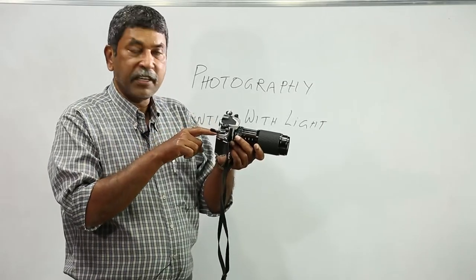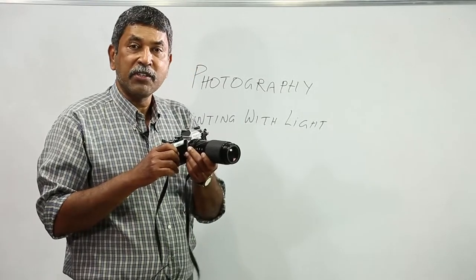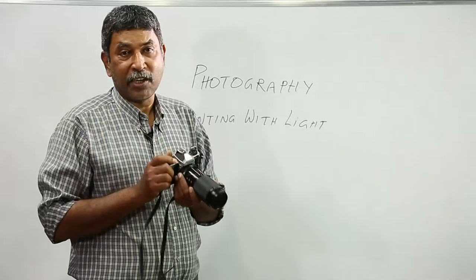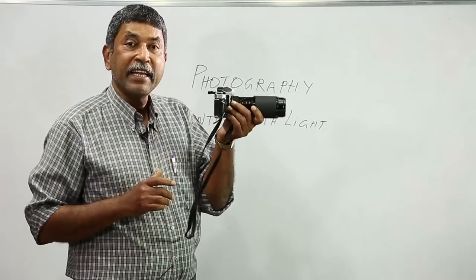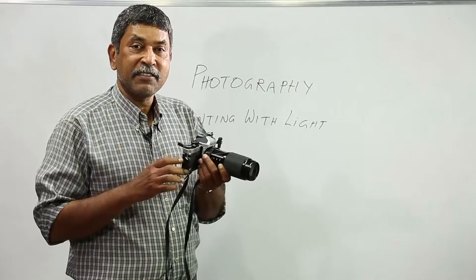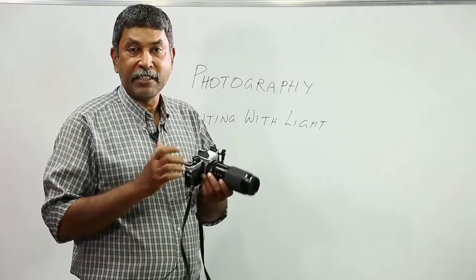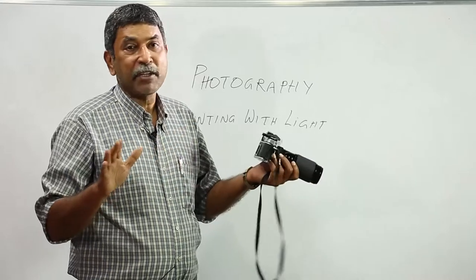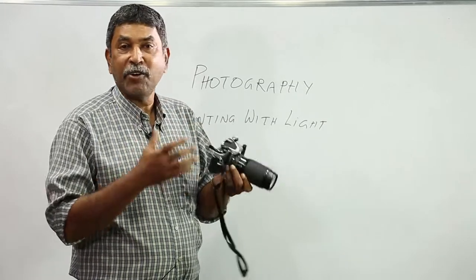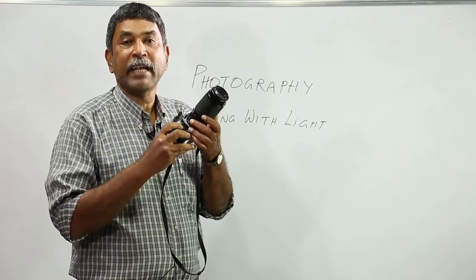The shutter dial is here. In a similar manner it is there in the digital camera also — we can control the shutter, but it is all electronics now. This is a mechanical camera because in those days everything was mechanical, but now it is all battery-oriented, meaning if you do not have a battery the camera stops.